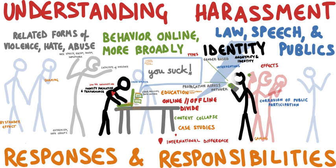When the individual is the main target of cybercrime, the computer can be considered as the tool rather than the target. These crimes generally involve less technical expertise. Human weaknesses are generally exploited. The damage dealt is largely psychological and intangible, making legal action against the variants more difficult. These are the crimes which have existed for centuries in the offline world. Scams, theft, and the likes have existed even before the development of high-tech equipment. The same criminal has simply been given a tool which increases their potential pool of victims and makes them all the harder to trace and apprehend.